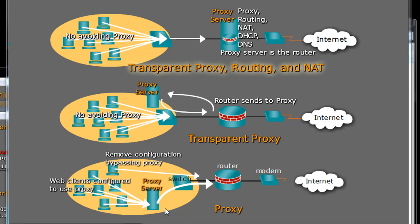So that's a proxy scenario. There are ways of trying to control that — like you could set up group policies to force your users not to be able to change those settings in the web browser. But then you'd need additional group policies for other types of web browsers, and users could always put a web browser onto an external thumb drive. So there are always ways around this scenario.